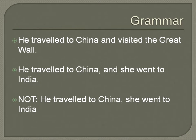So, if your subject is doing the action of both verbs, you don't need a comma. However, 'he traveled to China and she went to India' — commas. If you have two clauses that could each stand alone — 'he traveled to China' can stand alone as a sentence, 'she went to India' can stand alone as a sentence — combining them with 'and' requires a comma.